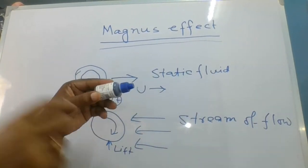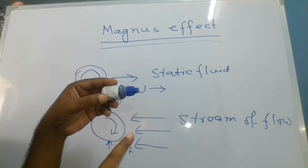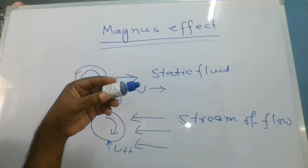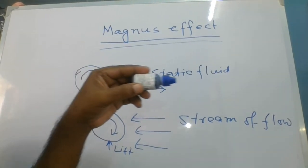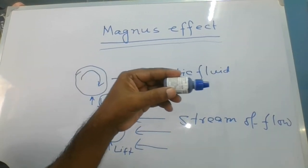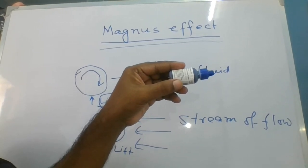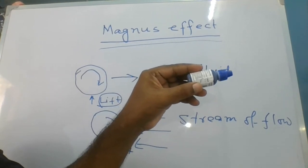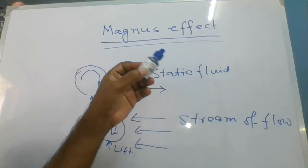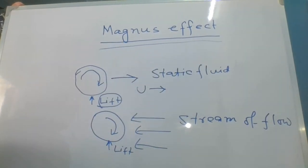So what happens at that time is one force is generated in the upward direction, by which instead of hitting the target, it will hit slightly above the target. This is due to the Magnus effect.